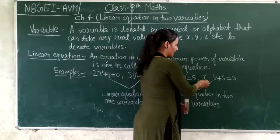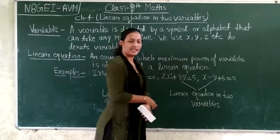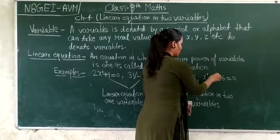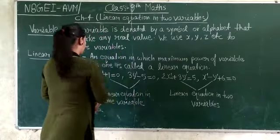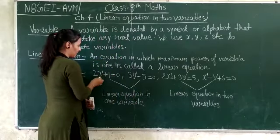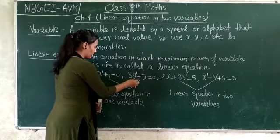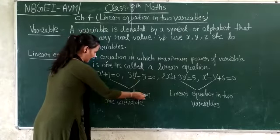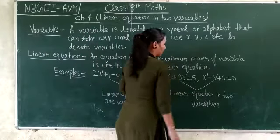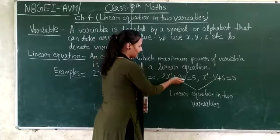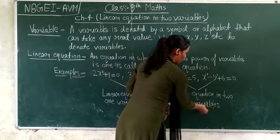Our last example is x − 5 + 6 = 0; here we have two variables, x and y, and the power of both is 1, so this is also a linear equation. Looking at our first example, we have only one variable, x, so it is known as a linear equation in one variable. In the last examples we have two variables, x and y, so those are known as linear equations in two variables.